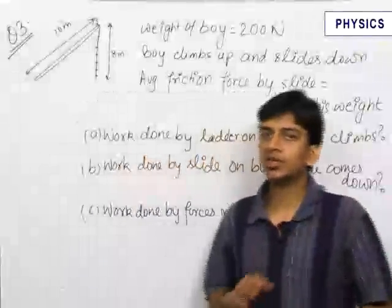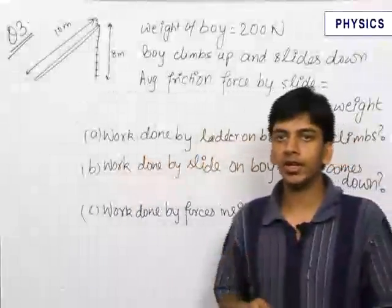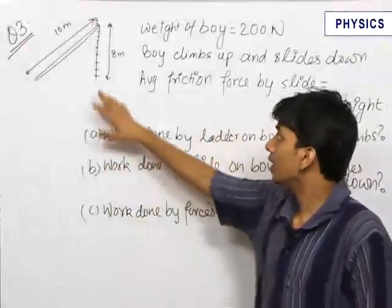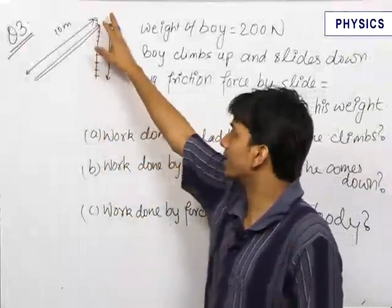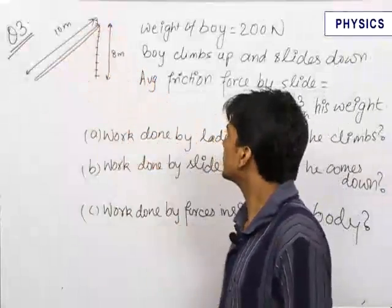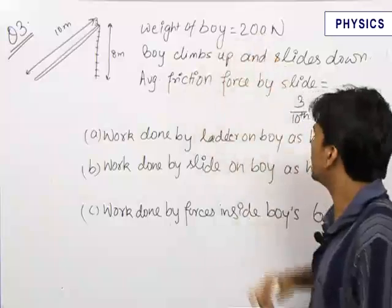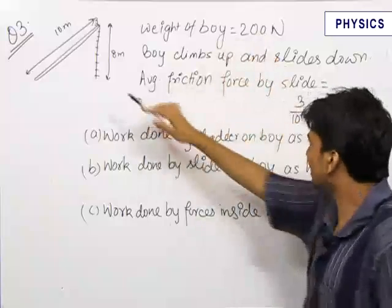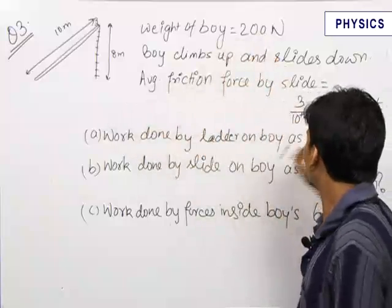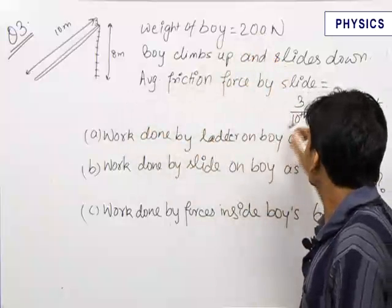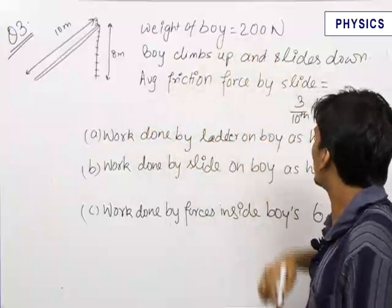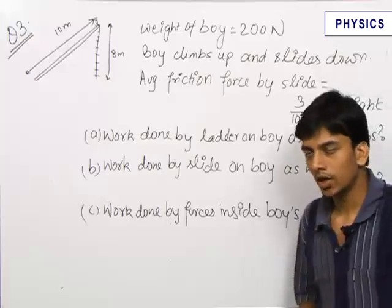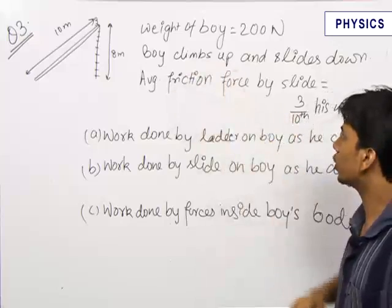This is an interesting question which can be solved totally mentally if you know the concepts clearly. Here is a boy who climbs this ladder and gets down by the slide. The weight of the boy is given, and the average friction force by the slide is given to be 3/10 of his weight, that is 3/10 into 200, which comes out to be 60 Newtons.